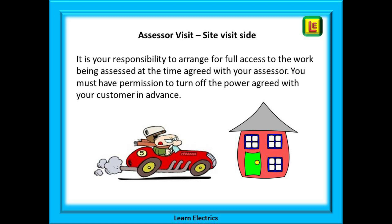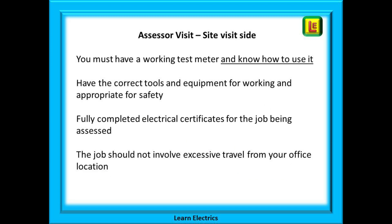What about the site visit? It is your responsibility to arrange full access to the work being assessed at the time agreed with your assessor. You must have permission to turn the power off, agreed with your customer in advance. You must have a working test meter and know how to use it. Make sure you have the correct tools to hand and appropriate health and safety in place. Fully completed certificates for the job being assessed must be provided, and the job should not involve excessive travel — five or ten miles from your office location should be considered a maximum.